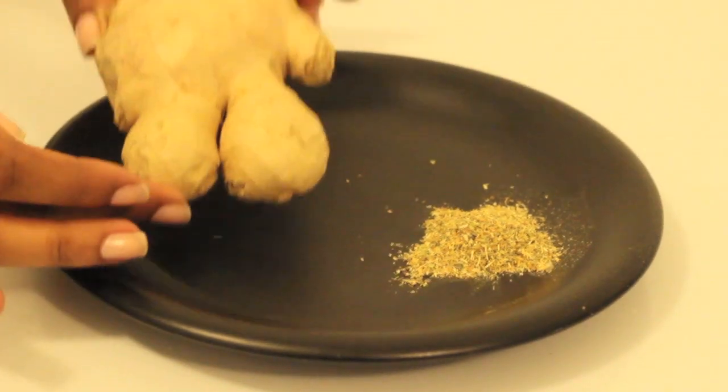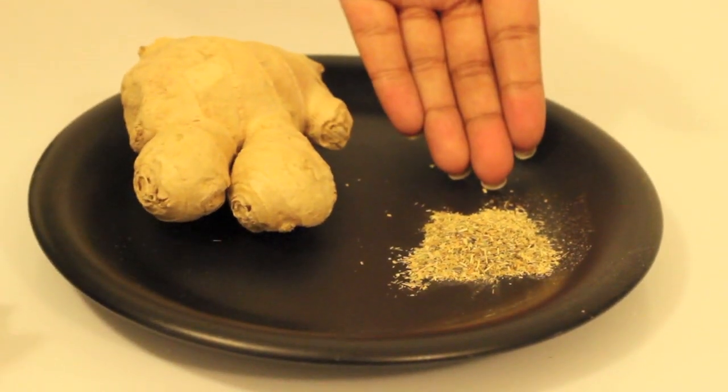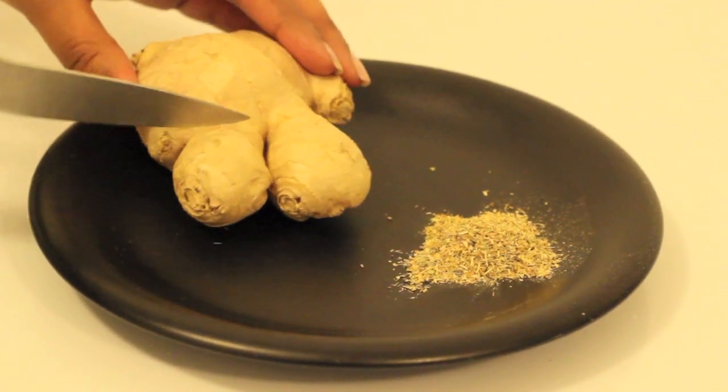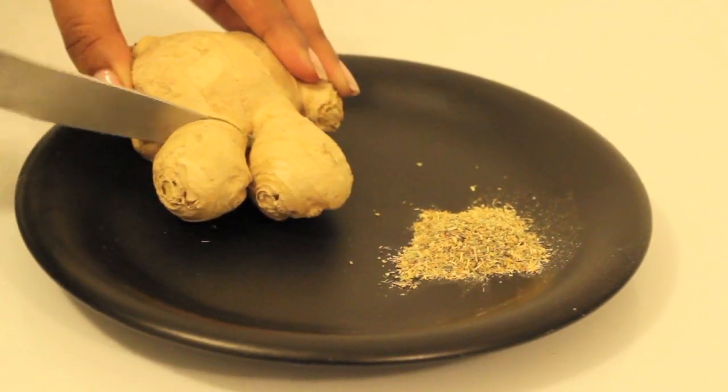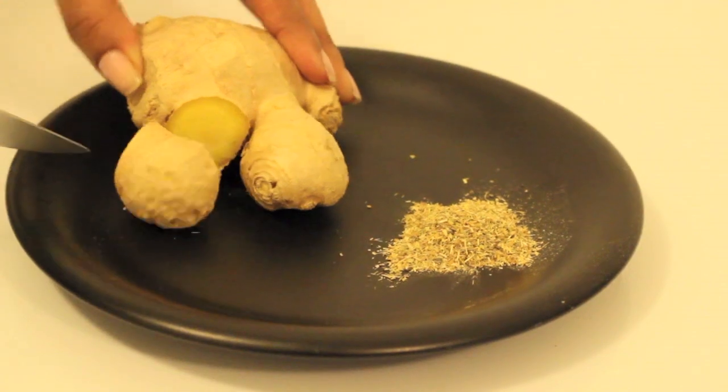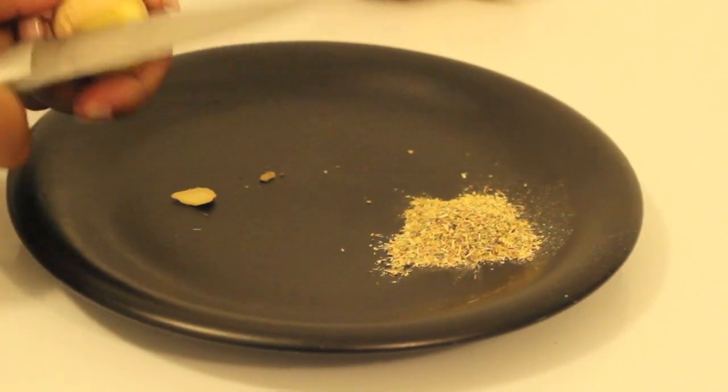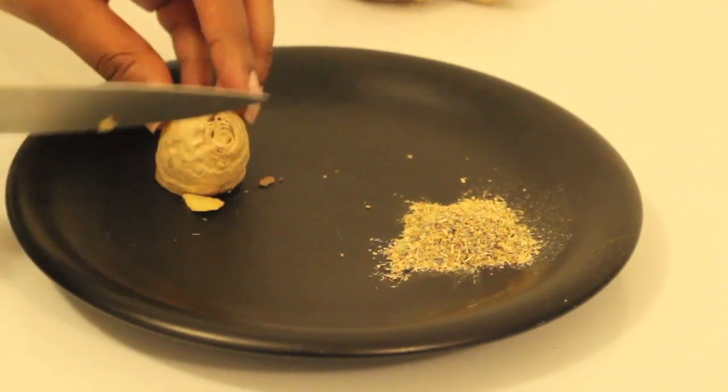To make this recipe you will need ginger and chamomile tea. Start by chopping up a small piece of your ginger. I took a small piece here and I will remove the skin and then cut it up into big chunks.